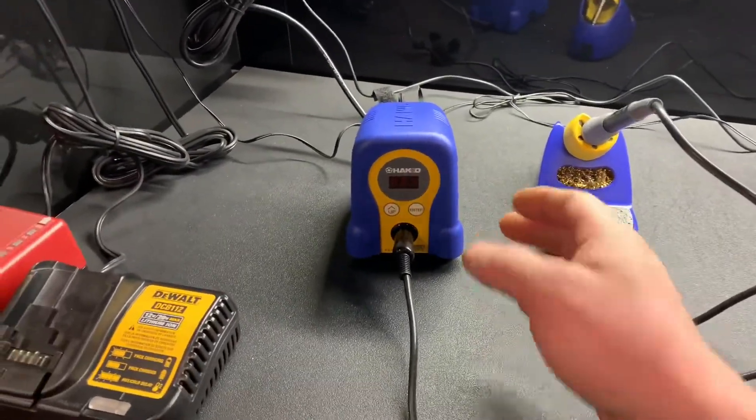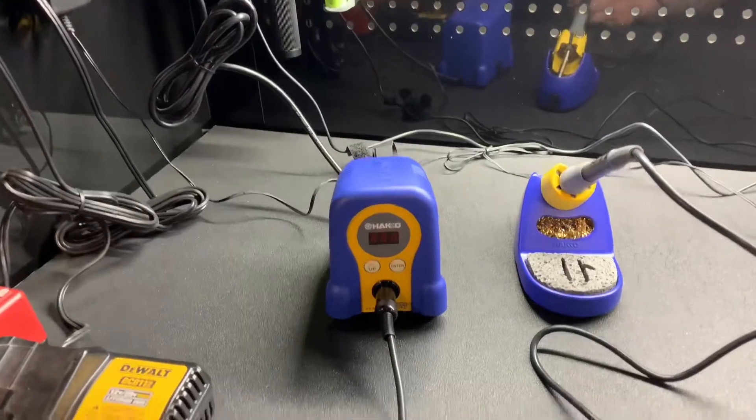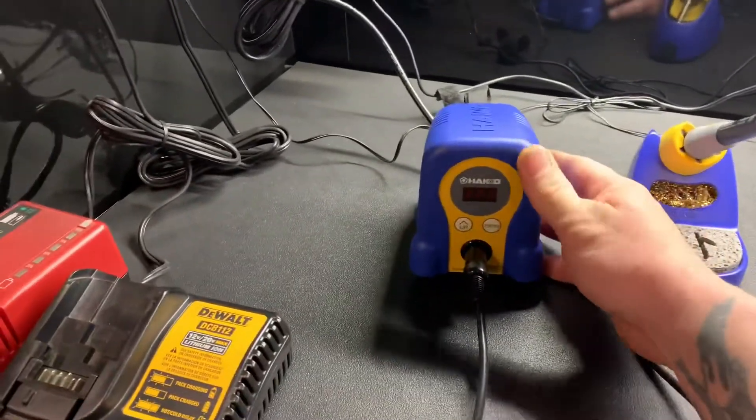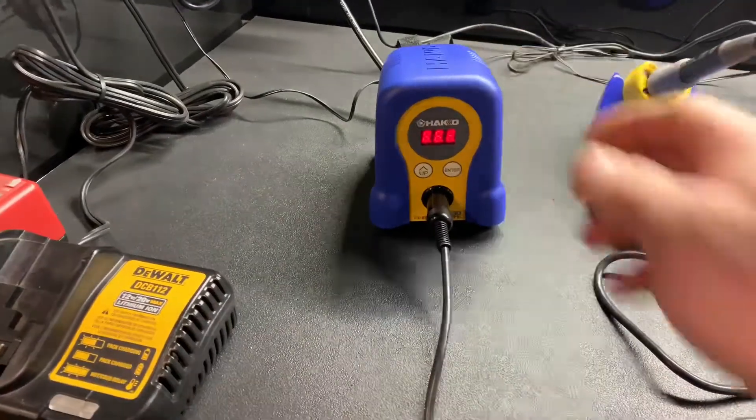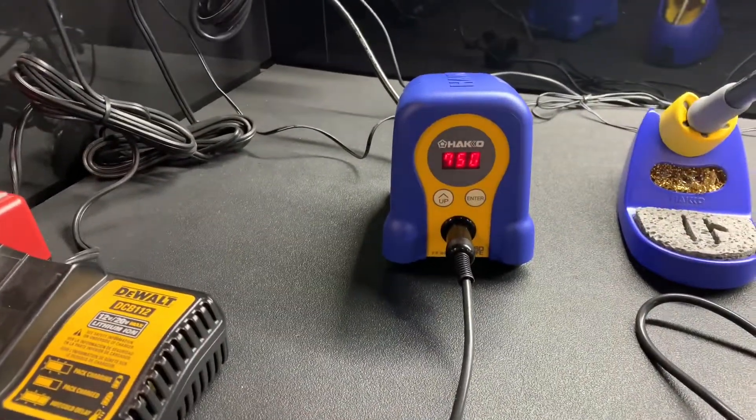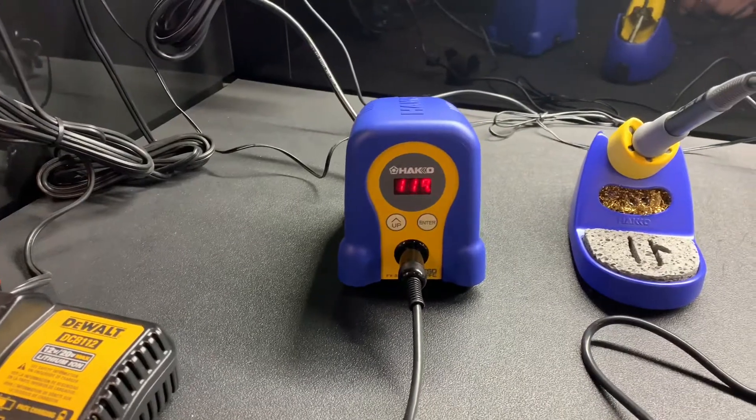We'll melt a little solder and show you how to tin your tip and get some proper care. So I'm going to hit the button on the side. As you see 750 is our temperature that we want.